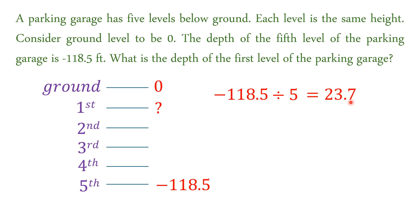Since we got 23.7, so that means each level is having a height of 23.7 feet, a distance from ground to first, first to second, second to third, and so on. So, that means the level, or the depth of the first level is negative 23.7 feet.